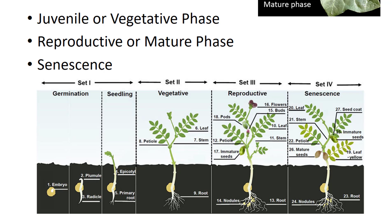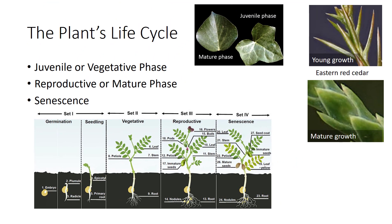Senescence phase involves internally controlled deteriorative changes, which are natural causes of death. Changes that occur during senescence include the following decreases in chlorophyll, protein, DNA and RNA, and photosynthesis, and changes in plant hormones — some increase, while some decrease. When the senescence phase is complete, leaf abscission occurs.